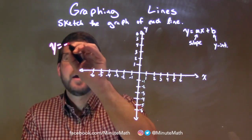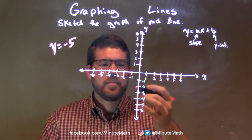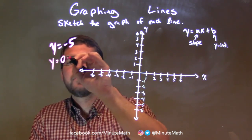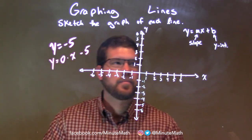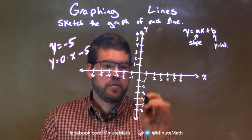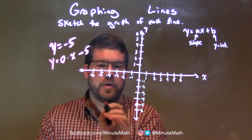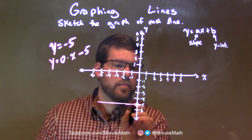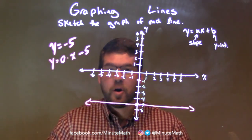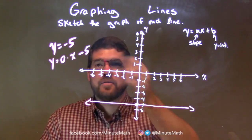y equals negative 5. So if I was given y equals negative 5, what I have to look at is the y-axis. It is in slope-intercept form — y equals 0 times x minus 5. We have a slope of 0, which means it's a horizontal line. Our y-intercept is negative 5. So negative 5 comes down here, we have a y-intercept right here, and then it's a horizontal line from there. We have just y equals a number — it's a horizontal line through where it crosses the y-axis.